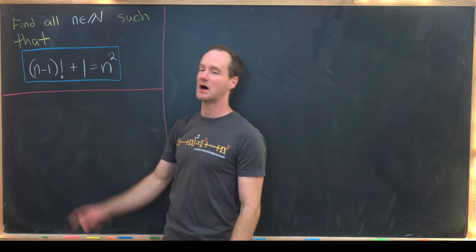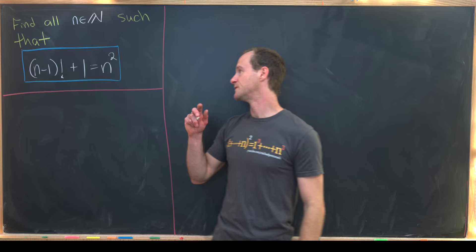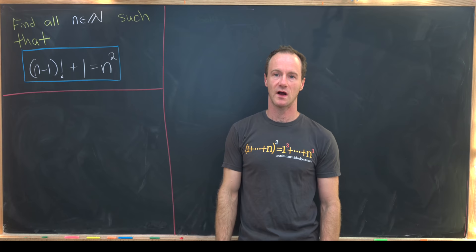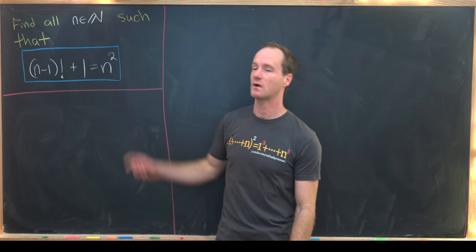And to motivate our solution we'll like to think that a factorial type object will always eventually be bigger than a polynomial type object. Here we've got this n minus 1 factorial term on the left and this n squared term on the right. So this left hand side of the equation will eventually get much much larger than this right hand side of the equation.